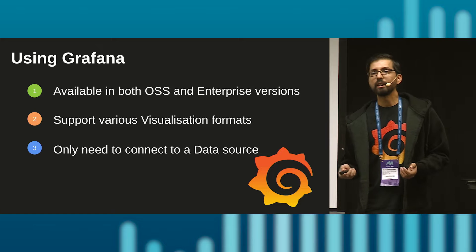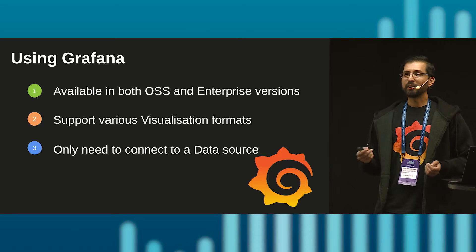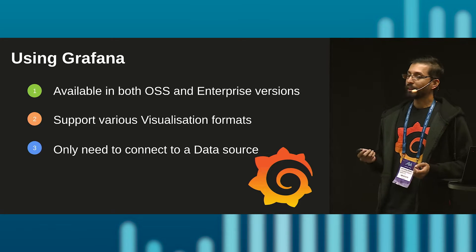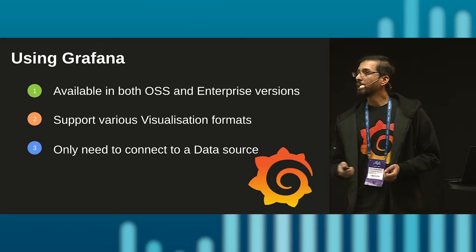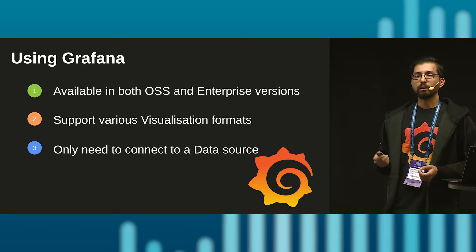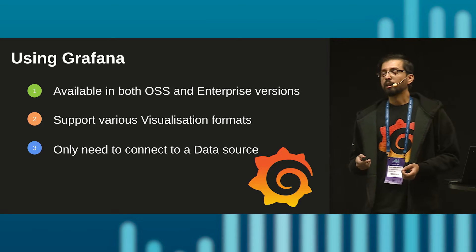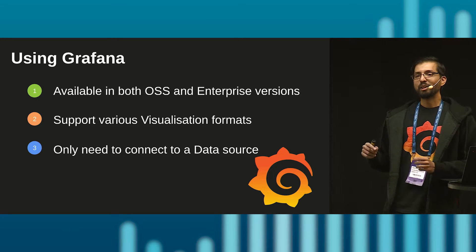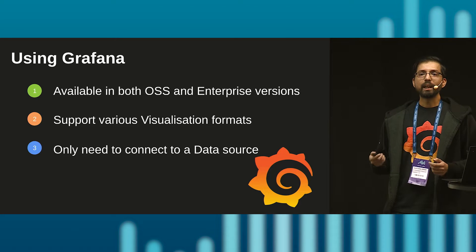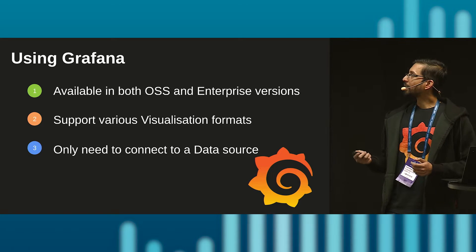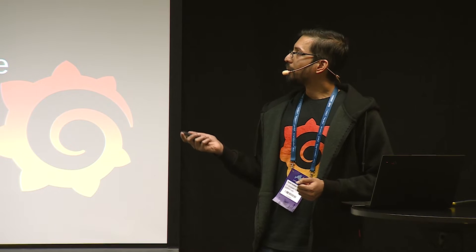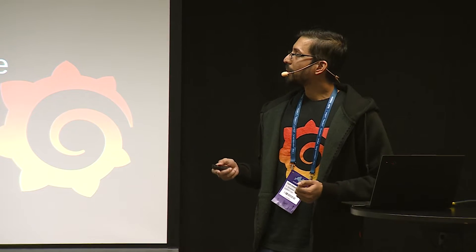First thing first, obviously you need Grafana. Please raise your hand if anyone has used Grafana. It's available in both free and enterprise versions, and it supports various data visualization formats — time series, bar chart, and so on. One common confusion is why data isn't coming in as time series — it depends on your data. If your API data has a time series column, you'll get time series; otherwise the default is the table view.